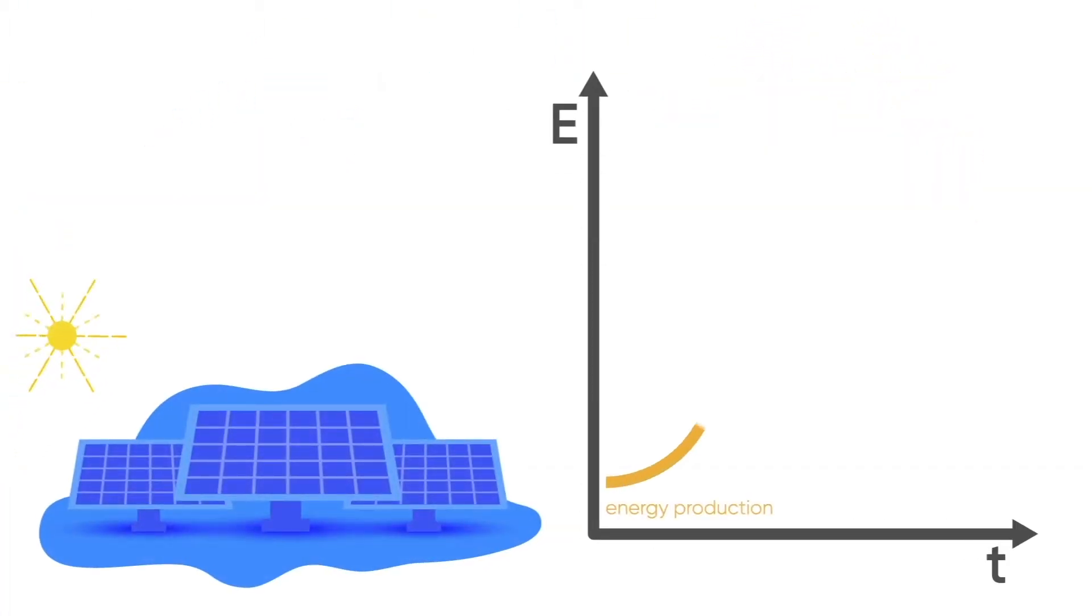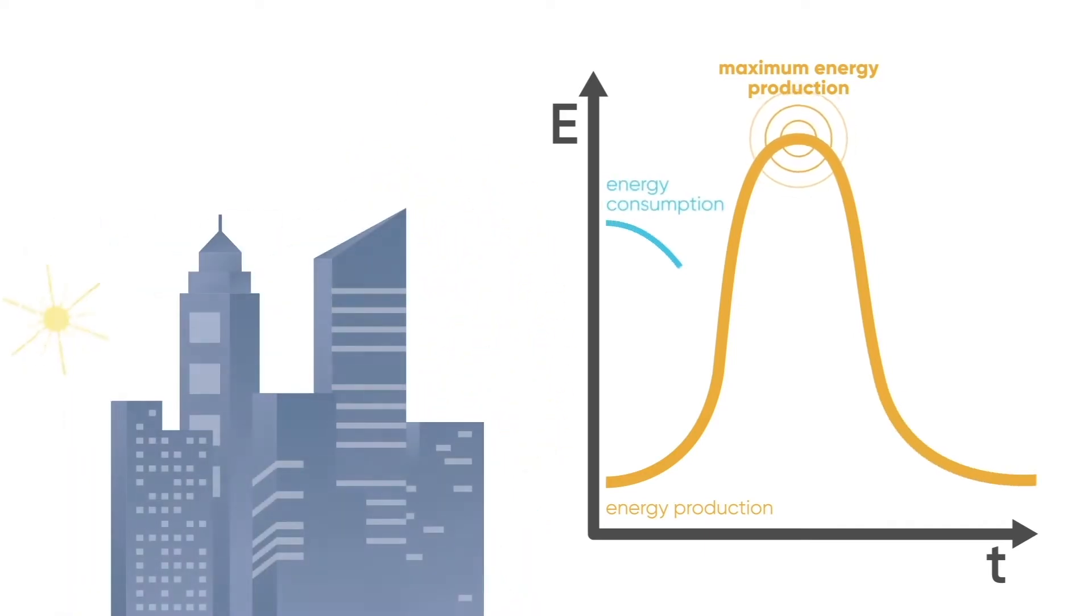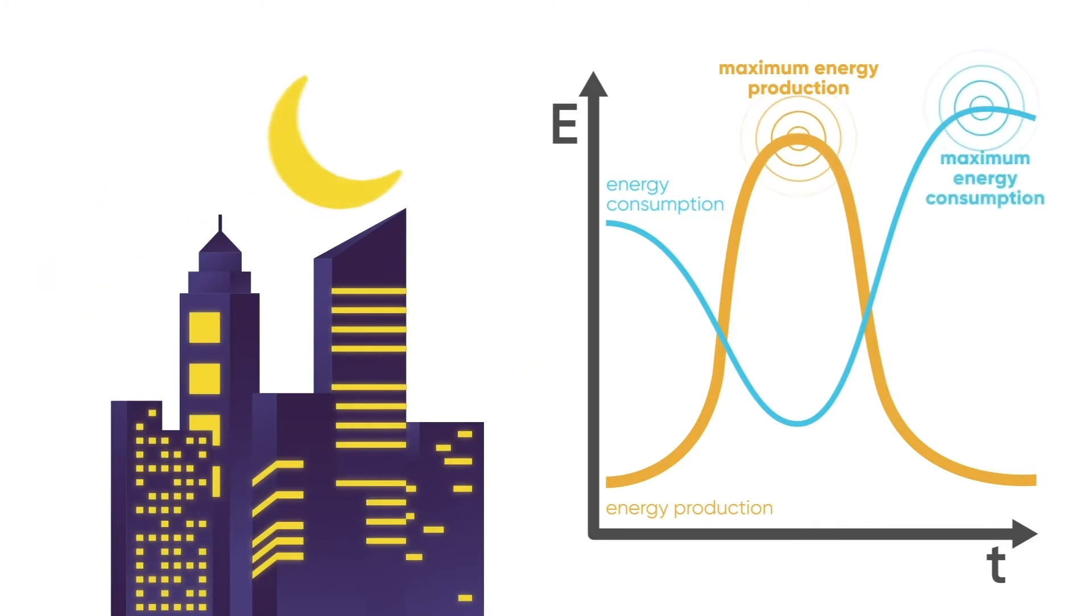An exemplary case of this problem is what happens to renewable energy power plants, where their maximum production time does not coincide with the electrical network's maximum consumption time, which generates a large amount of spillover energy that is wasted.